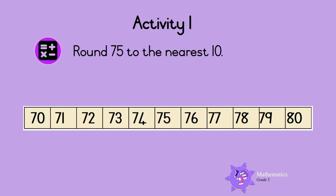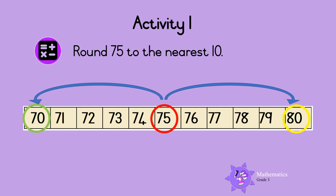So 77 rounded up to the nearest 10 is 80. Last one. Round 75 to the nearest 10. Here is 75 on the number line. 75 can be rounded to 70 or 80. Which 10 is closer to 75? 70 or 80? 75 is exactly in the middle between 70 and 80. So do we round up or do we round down? When the number is exactly in the middle, we always round up. So 75 rounded to the nearest 10 is 80.